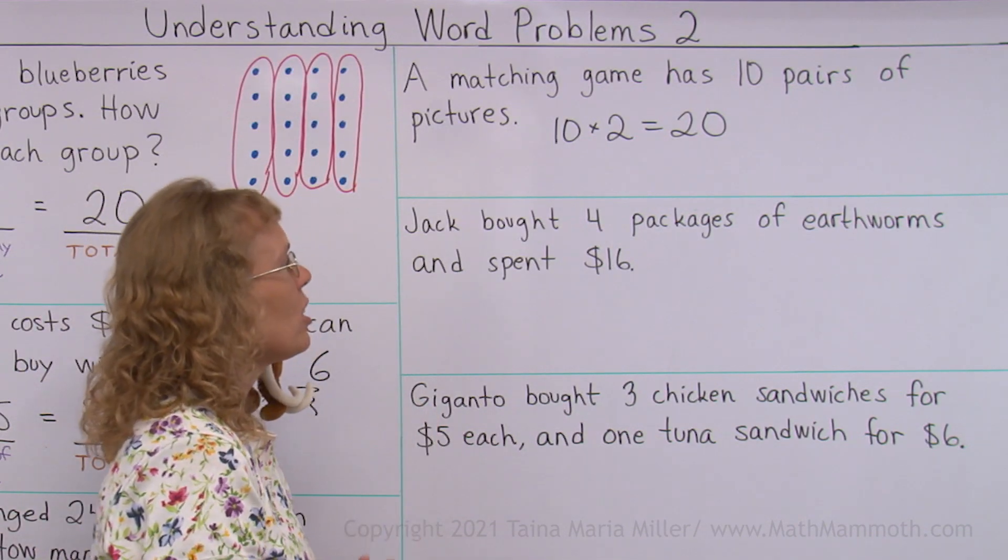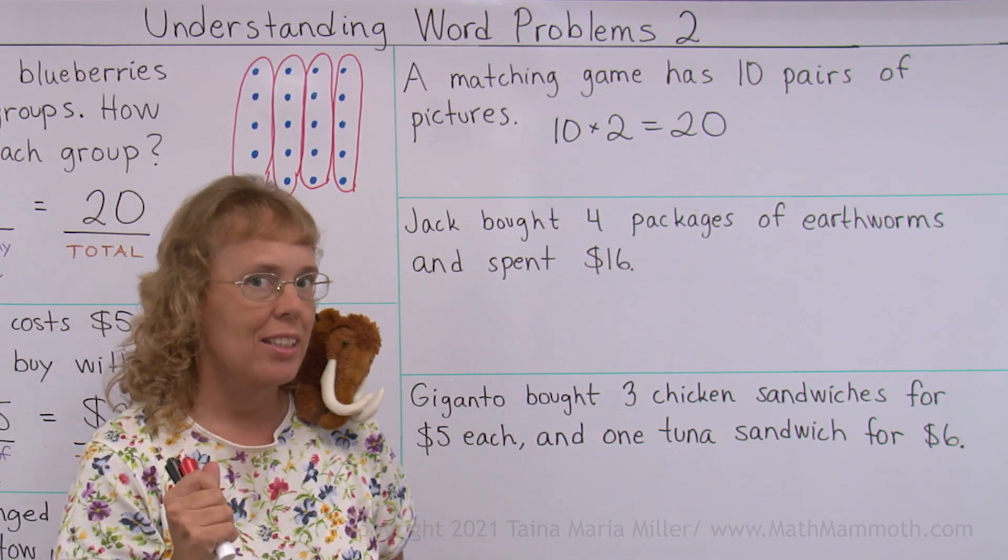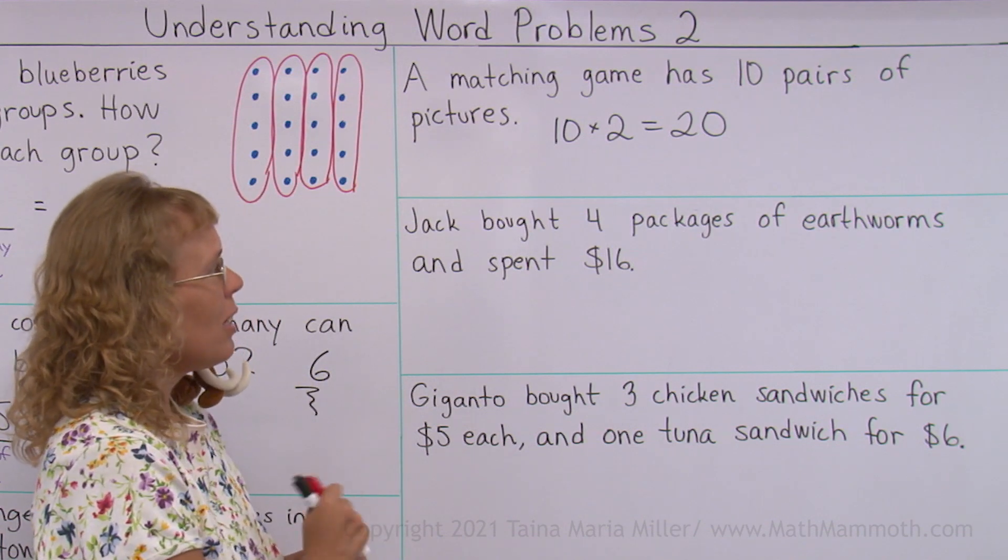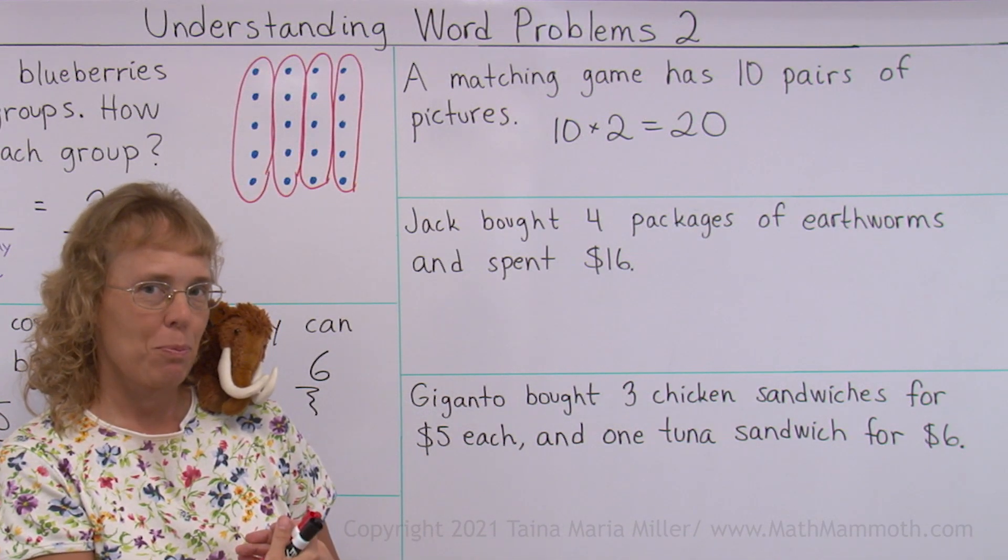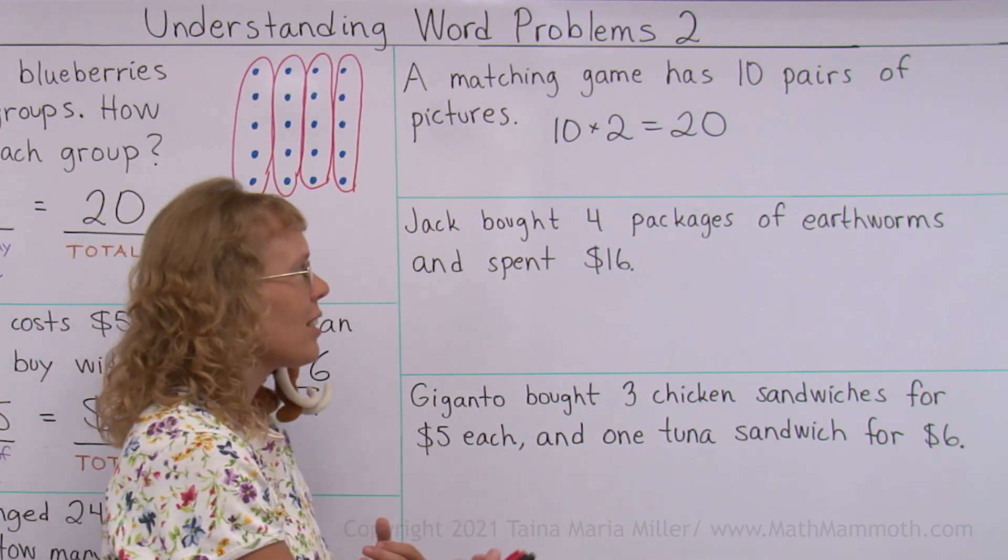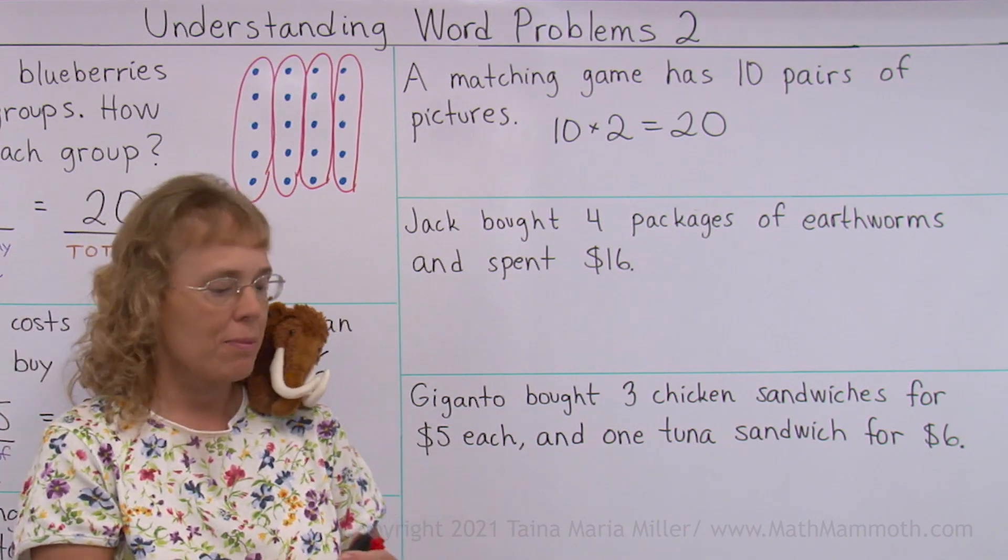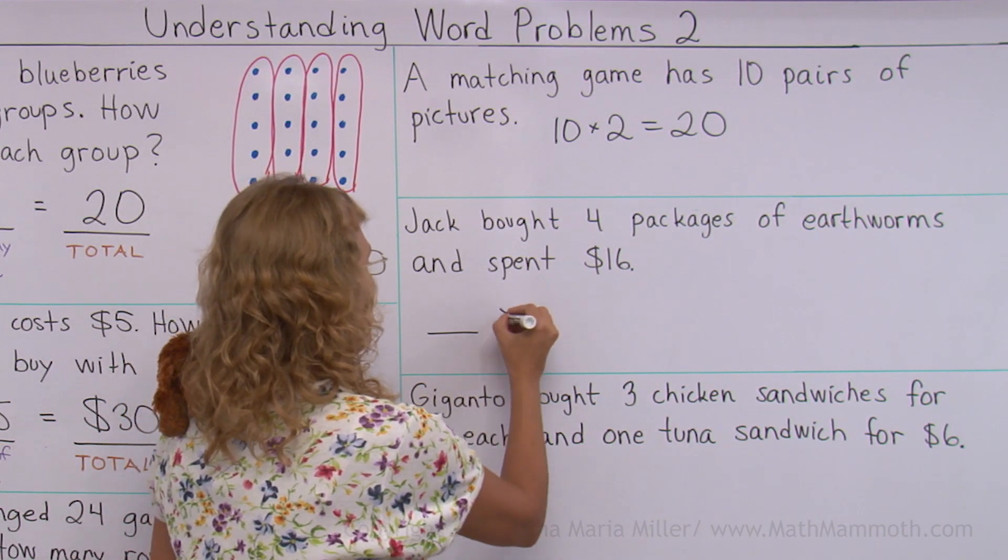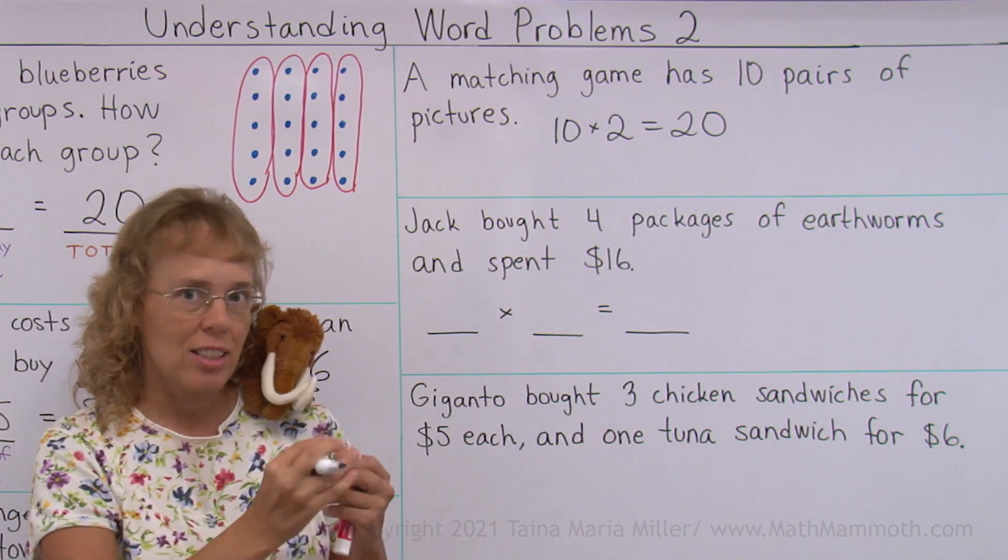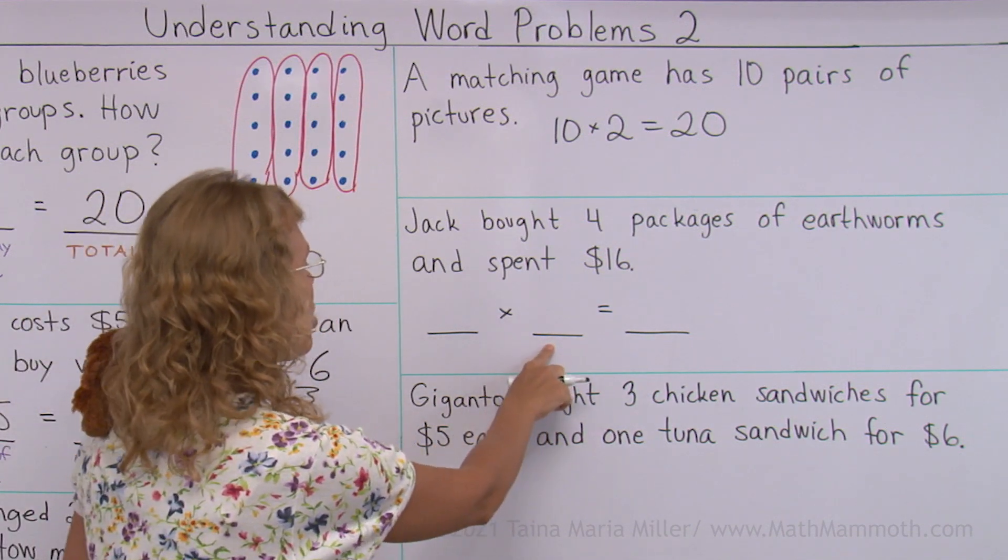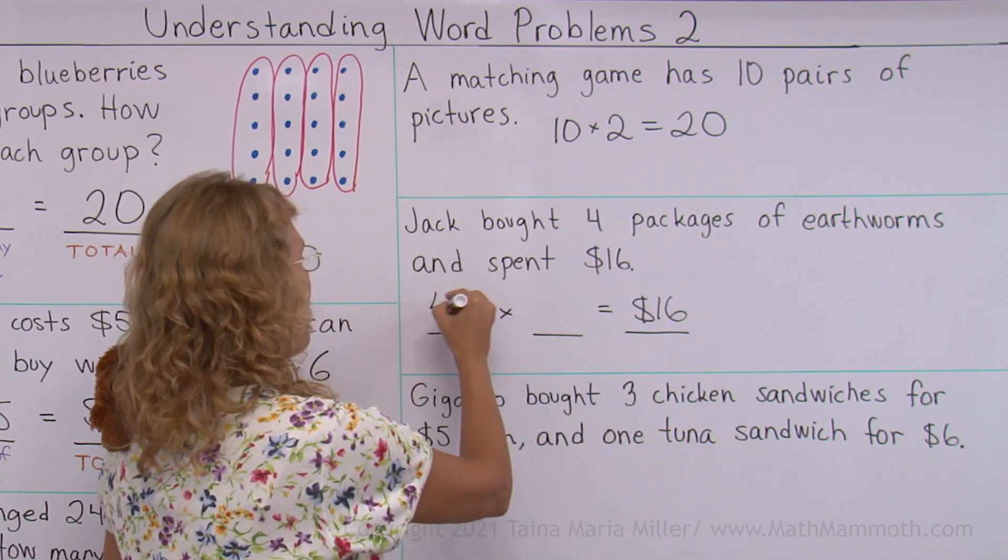Jack bought four packages of earthworms and spent sixteen dollars. What could we ask in this problem? He bought four packages of earthworms and he spent sixteen dollars. So we could ask how much did one package cost or how much did each package cost?